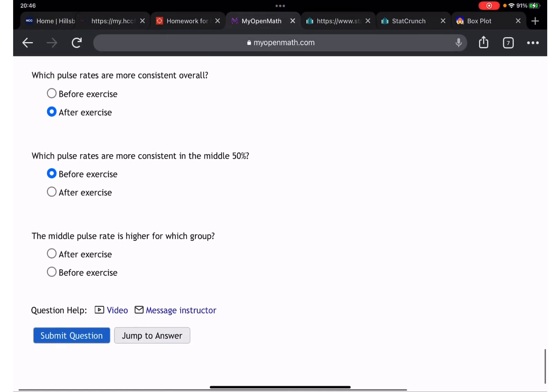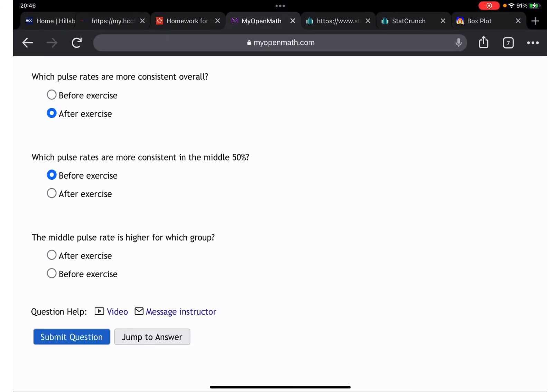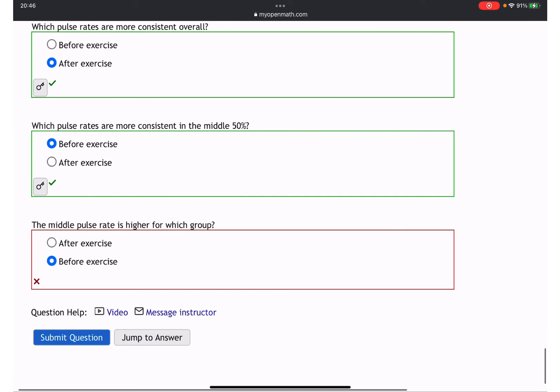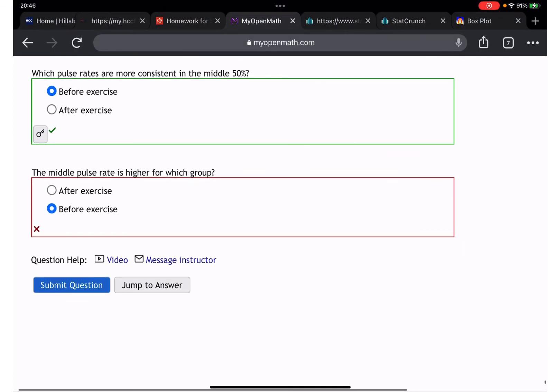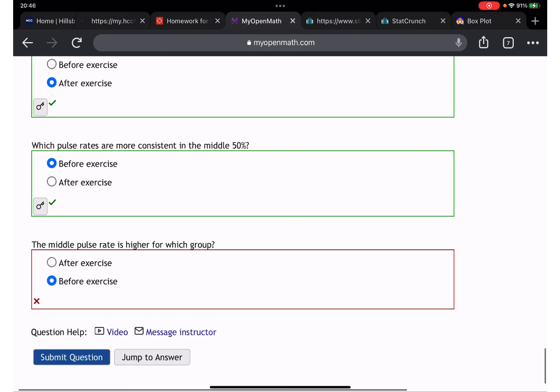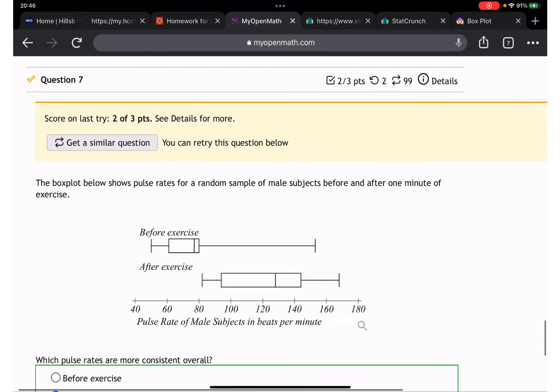Second one: which pulse rate are most consistent in the middle 50%? The one that is before exercise, right, because it's not as spread. So it's gonna be before exercise. The middle pulse rate is higher for after exercise. Let's see - correct, correct.